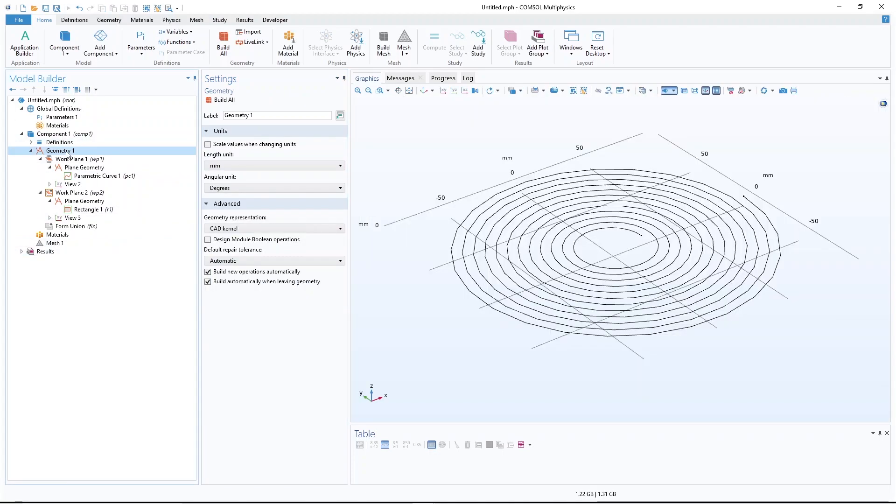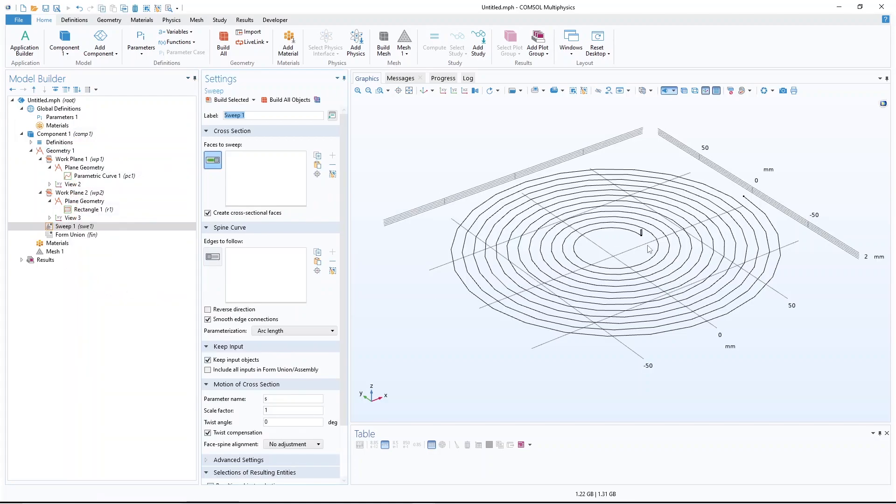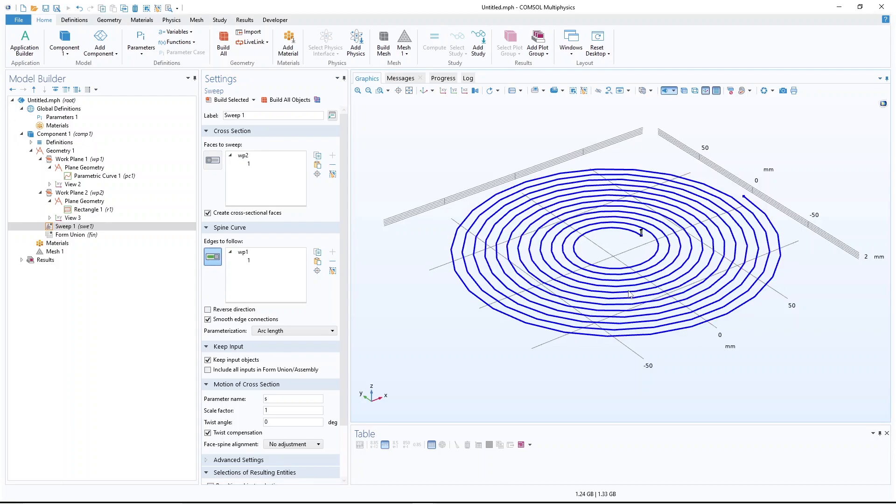Okay, so right click on geometry and click on sweep. So now I have this rectangle and I can sweep it over this curve. Click build.